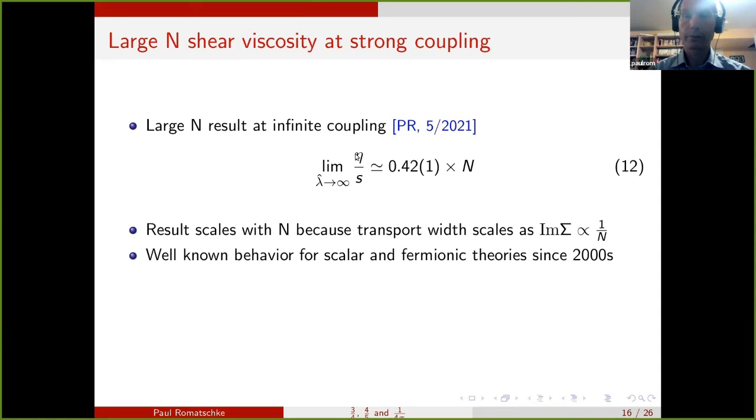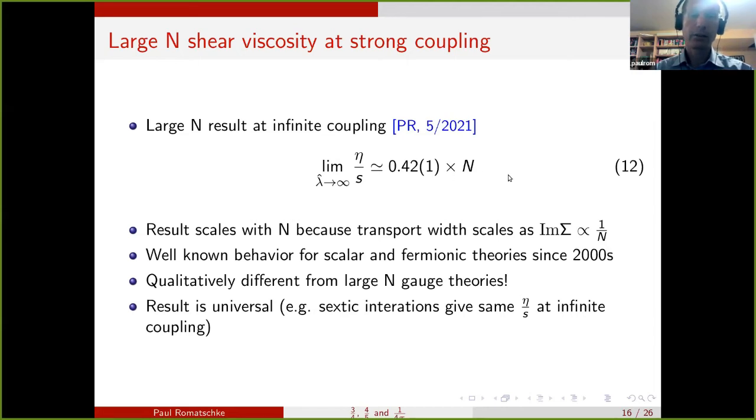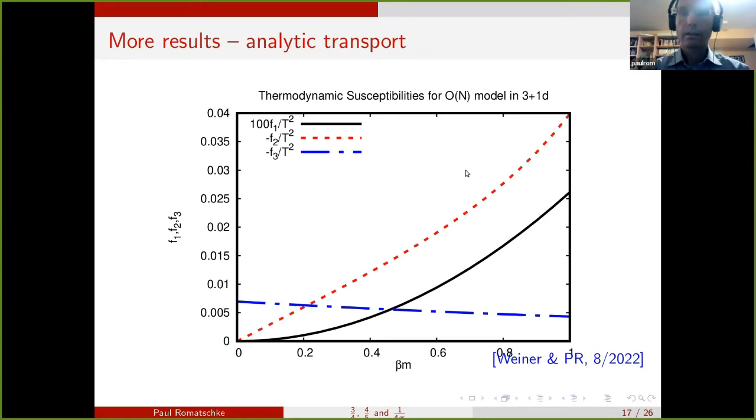The constant can be calculated, and I found numerically that the constant is about 0.42 times the number of vectors N. And it scales with the number of vectors because in the O(N) model, the transport width is inversely proportional to the number of vectors, and that gives rise to this number N in the shear viscosity ratio. It turns out that this behavior was well known already since the late 1990s and early 2000s for scalar and vector theories. But it's qualitatively different for large N gauge theories where the shear viscosity over entropy density ratio does not scale with N. The result here again is universal, meaning that if you change the interaction from quartic to sextic or any other polynomial, you would get the same result in the strong coupling limit.